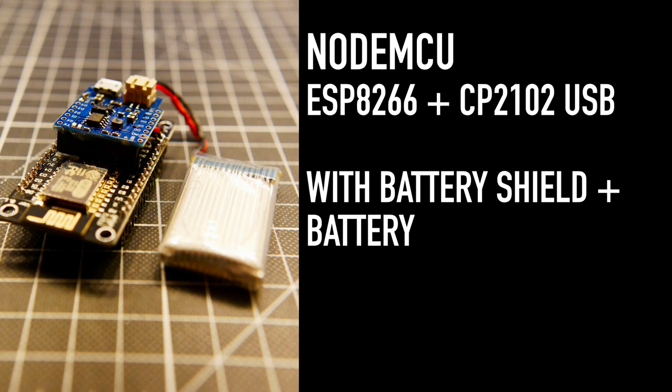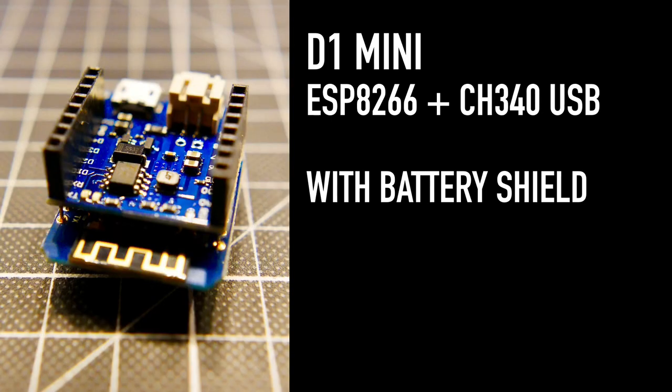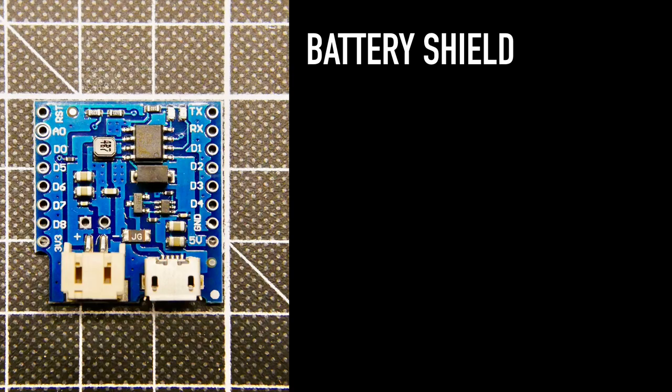There are also battery shields available which makes it easy to attach a battery and charge the battery through that shield. You just put it on top of your devices. You can do the same on the D1 mini. And so it becomes a really small device with that battery shield. It's easy to have remote devices inside your home and you can put on sensors and many things to this.